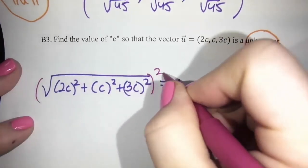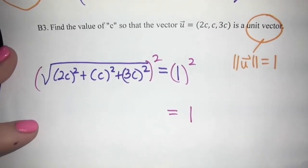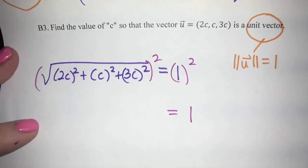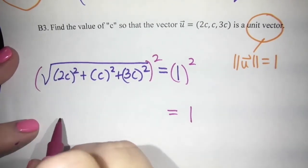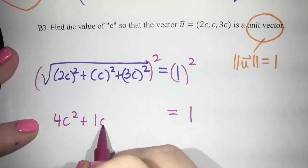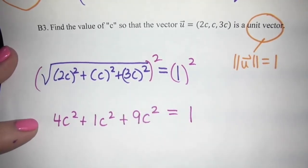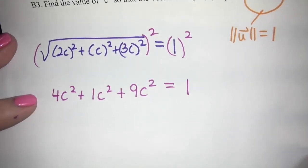Well, we would square both sides. And so on the right, it's still just one squared. So it's still one. But on the left, we get rid of the square root. So 2C all squared is 4C squared, plus 1C squared. And 3 squared is 9. So we get 9C squared. So we've got 4 plus 1 plus 9. So that's 14C squared equals 1.